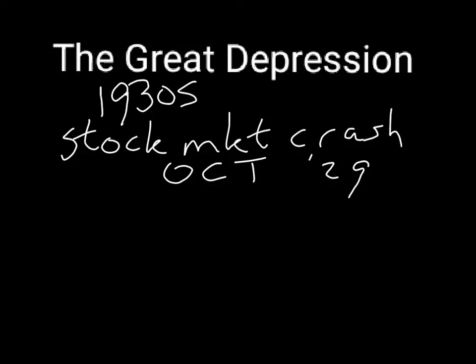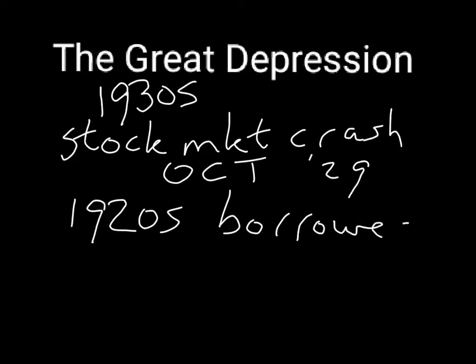For example, we noticed that during the 1920s, a lot of people borrowed money to buy stocks. They borrowed money to buy stocks because stock prices during the 1920s, from pretty much 1921 through October 1929, stock prices increased. So people wanted to buy stocks and wanted to take advantage of the increases in stock prices to try to get profits.